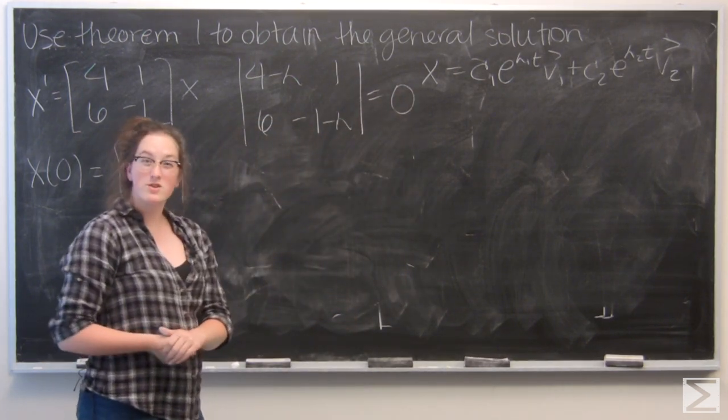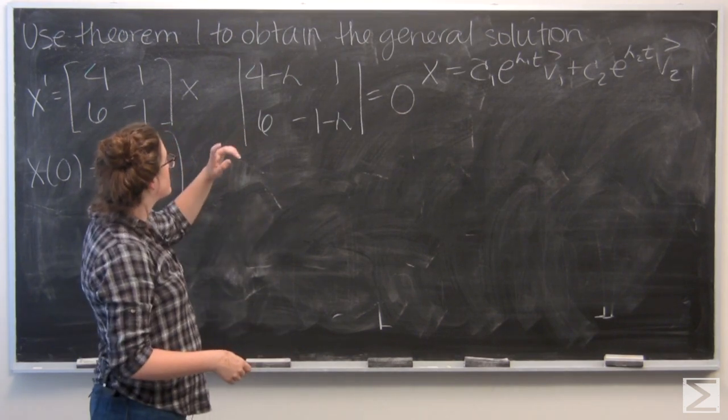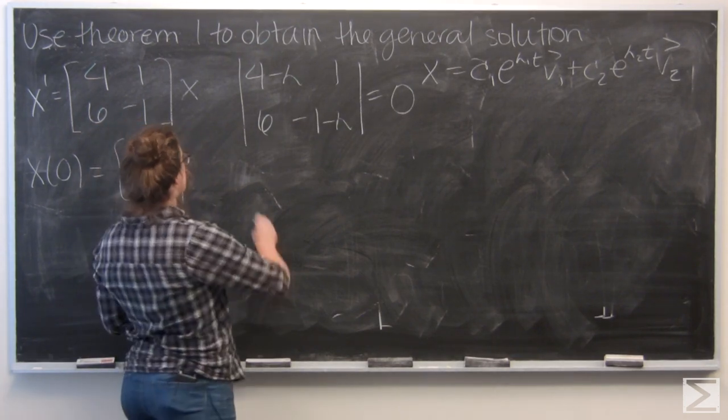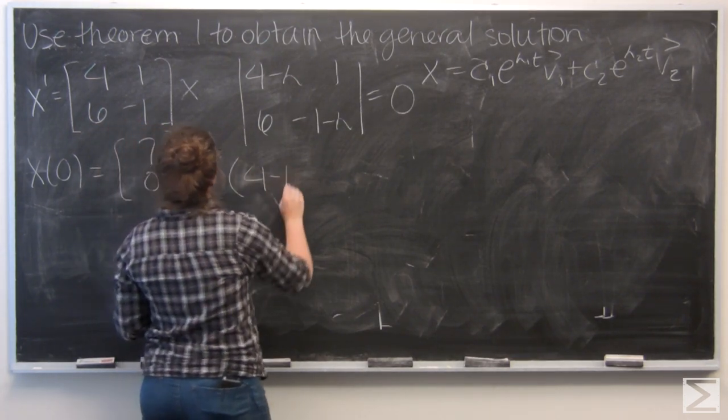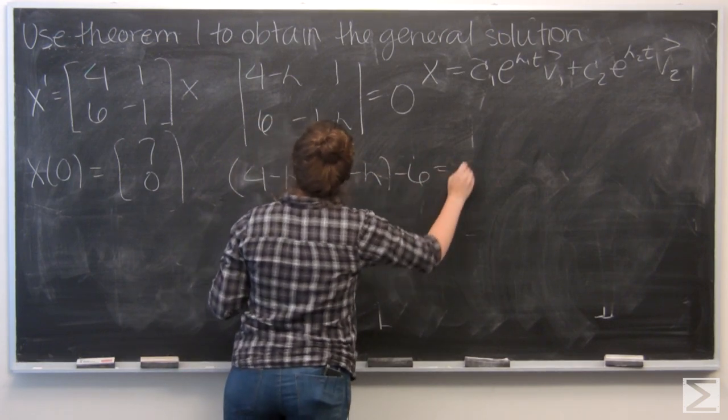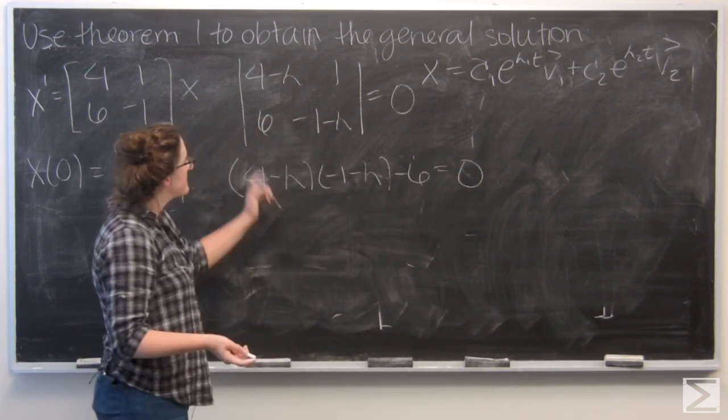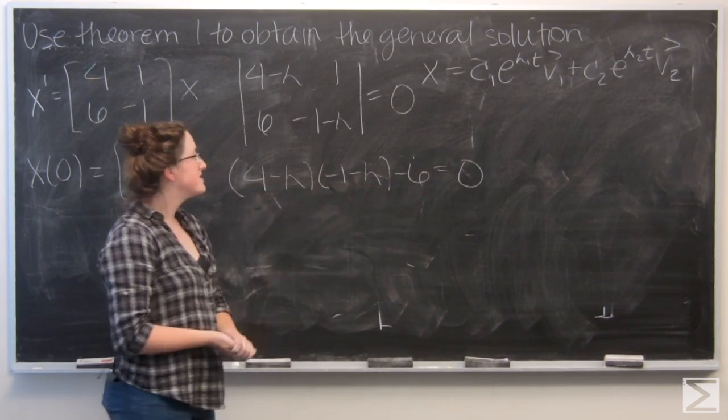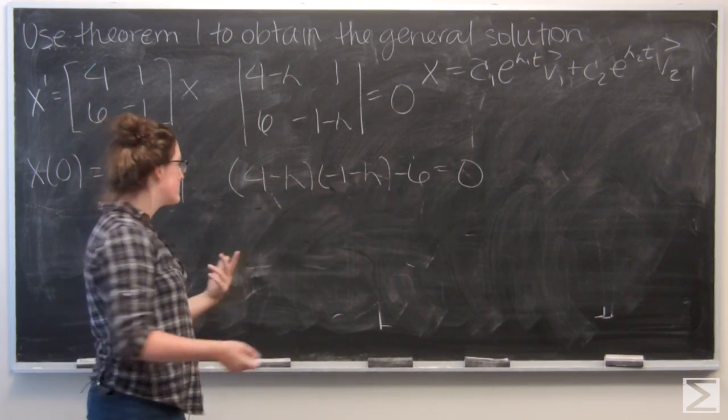Let's recall the determinant of a 2 by 2 matrix. I want to take the product on the main diagonal and subtract from the other diagonal. So I have quantity 4 minus lambda times quantity negative 1 minus lambda minus 6 equals 0. Now I'll multiply everything out.